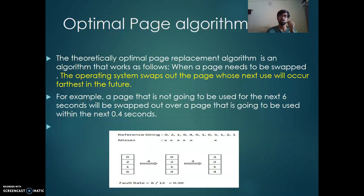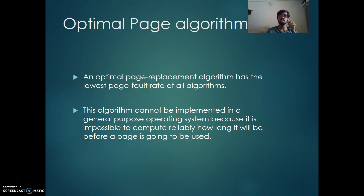There is also the Optimal Page Algorithm, in which the operating system detects or computes what the next page will be used by the processor, and replaces accordingly. For example, a page that is not going to be used for the next six seconds will be swapped over a page that is going to be used in the next 0.4 seconds. This is the most efficient or optimal algorithm because it detects what the next page used by the system will be. However, a general processor cannot implement this algorithm — it needs a high-performance processor — but these algorithms still exist.